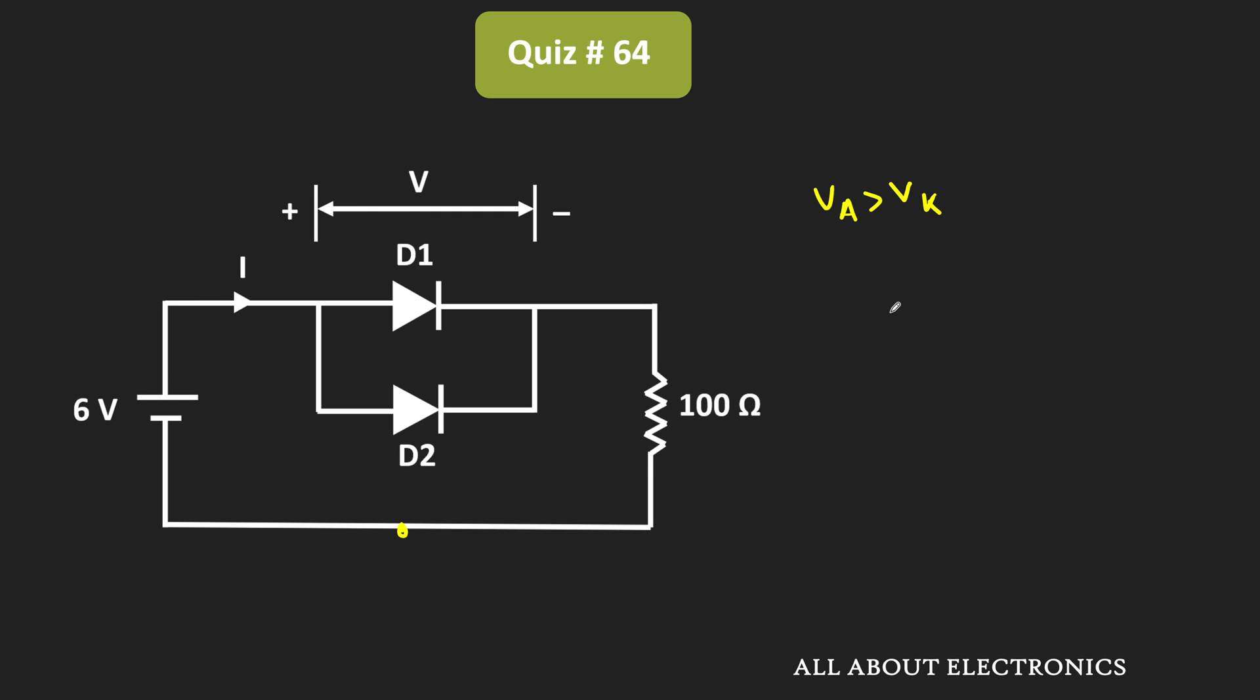Since D1 is the ideal germanium diode, it will turn on first. As soon as it turns on, it acts as a short circuit. Now the voltage across D2 is 0V, so D2 will remain OFF.